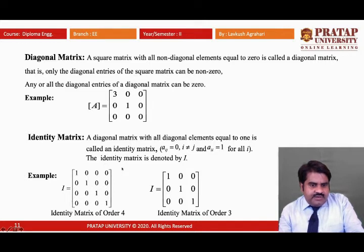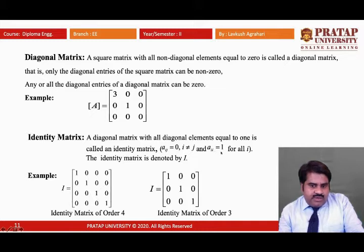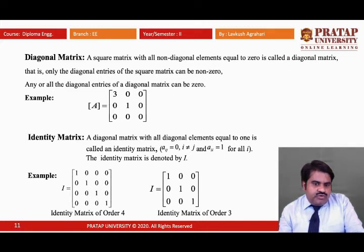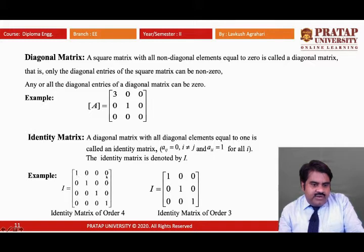Similarly, the identity matrix: a diagonal matrix with all diagonal elements equal to 1 is called an identity matrix. Mathematically, Aii = 1 for all values of i, and Aij = 0 when i ≠ j. Two examples are given: one identity matrix of order 4 having 4 rows and 4 columns, and another of order 3 having 3 rows and 3 columns.